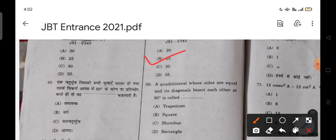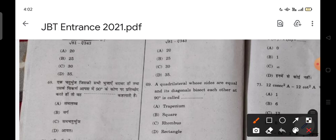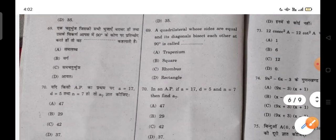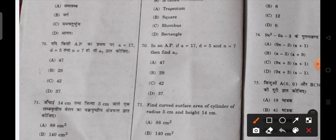Next, a quadrilateral whose sides are equal and its diagonals bisect each other at 90 degrees, we call rhombus. That's the correct answer. Next, in an AP, A is equals to 17, D is equals to 5, N is equals to 7, then A7 is 47.